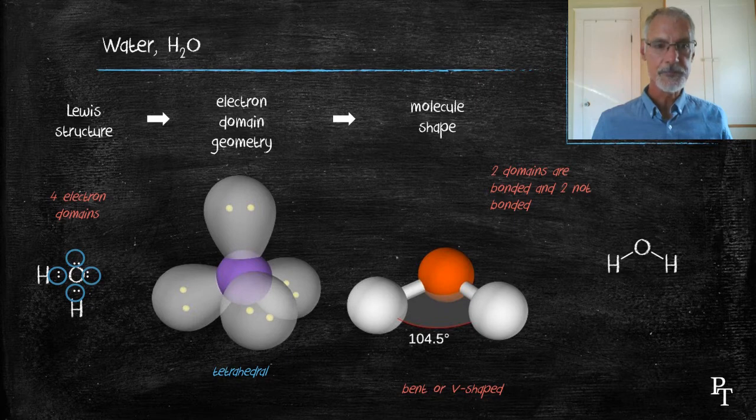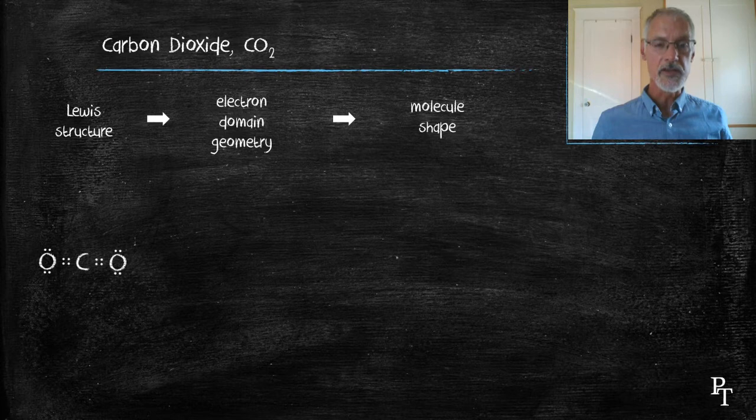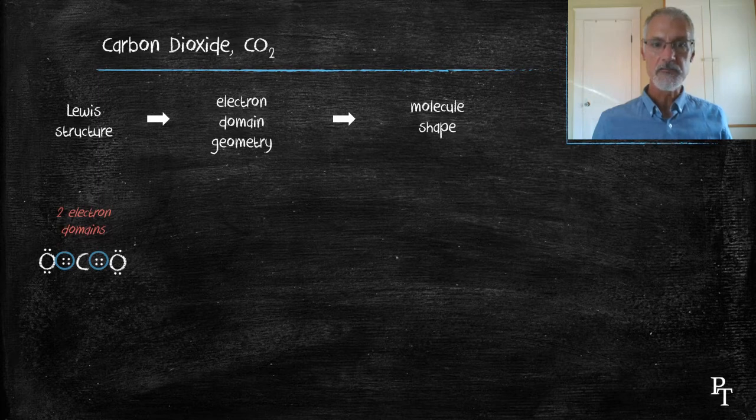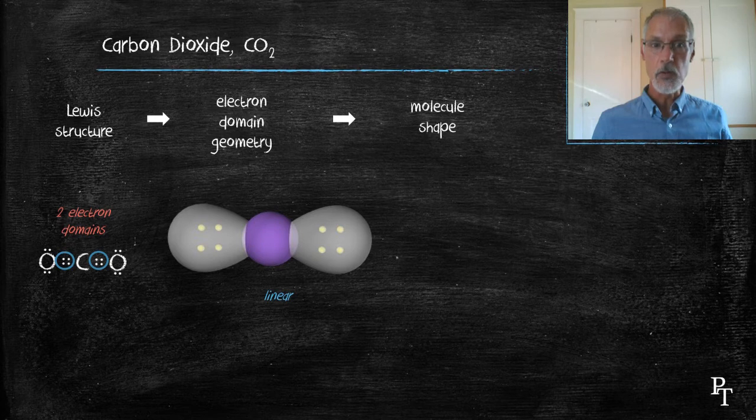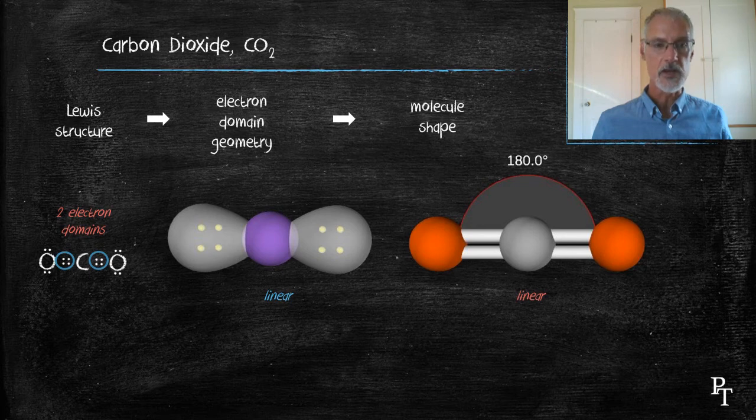Carbon dioxide. There's its Lewis dot diagram. Now, multiple bonds behave as a single region. So in this case, I have two electron domains. They will repel each other and form themselves into a line or a linear shape. In this case, both of those are bonded. So as a result, my molecule is also linear. And again, you may want to draw it this way.